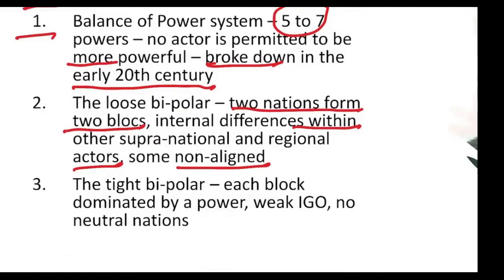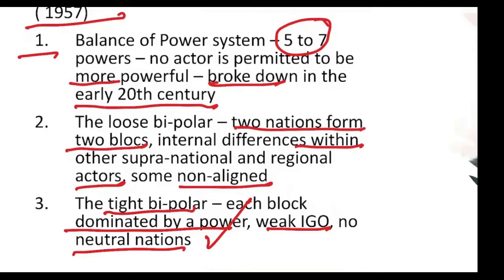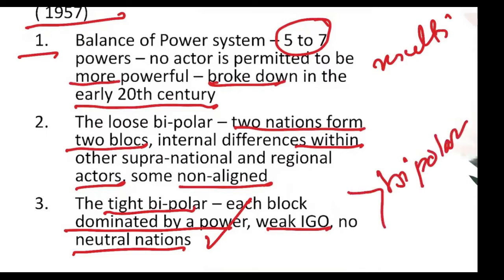But what happens if it is tight bipolar? It is very clear — each block is dominated by a power, IGOs are weak, and there are no neutral nations. So, one is about multipolarity and another is about bipolarity, with bipolarity classified into two.